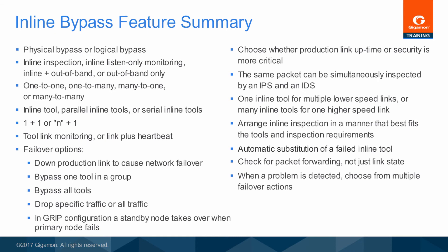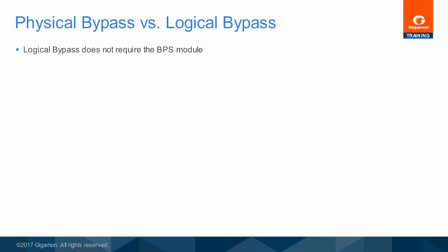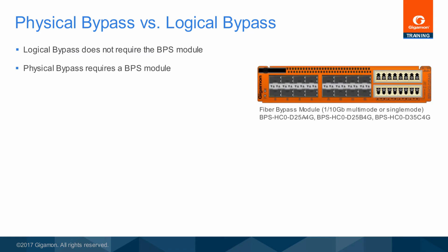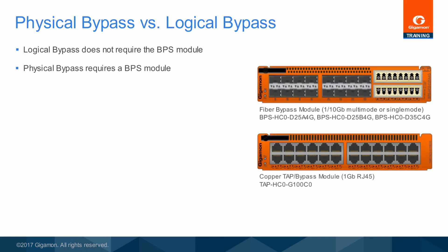With these and other configuration options to choose from, it is evident that the inline bypass feature set can accommodate almost any requirement. All of the inline bypass features can be configured using standard GigaVUE HC2 hardware as logical bypass. The key difference between physical and logical bypass is found in the special circuits that maintain the production network path if the GigaVUE HC2 loses power.